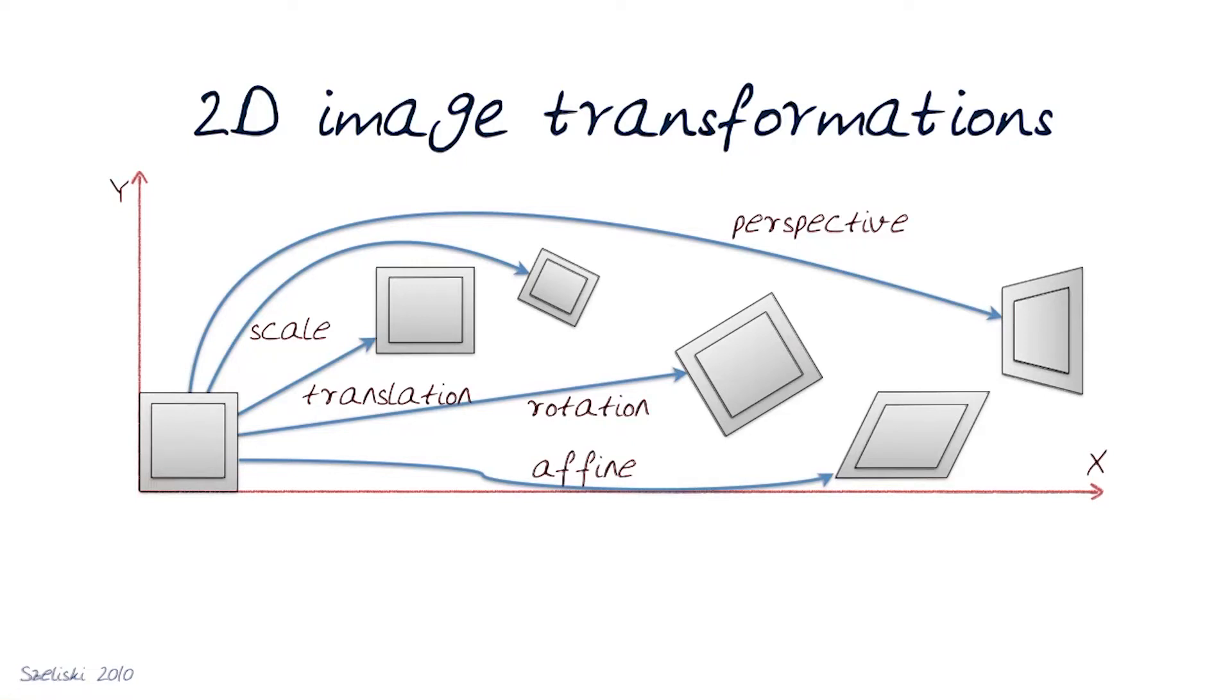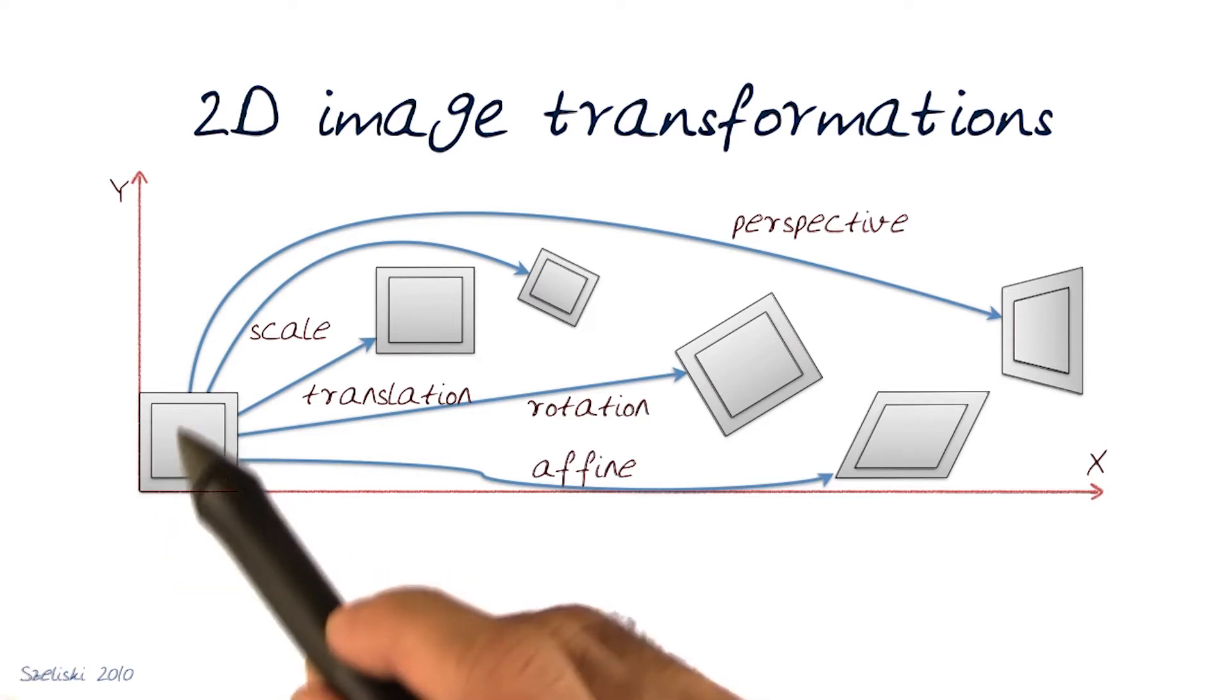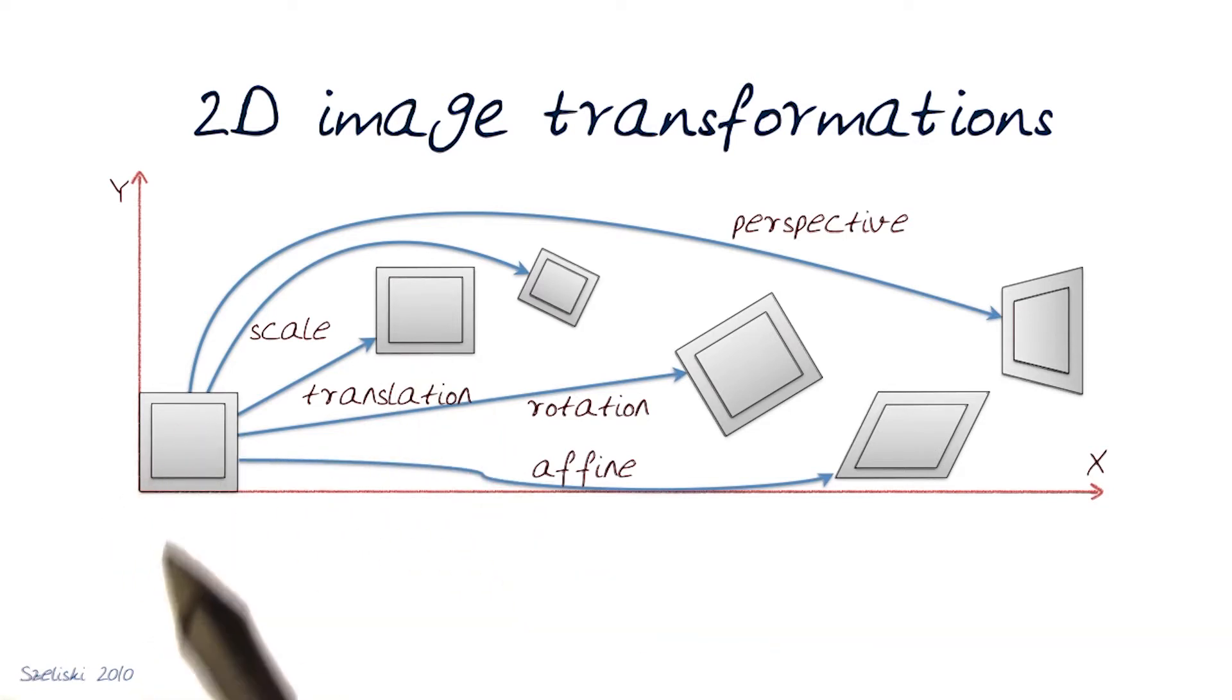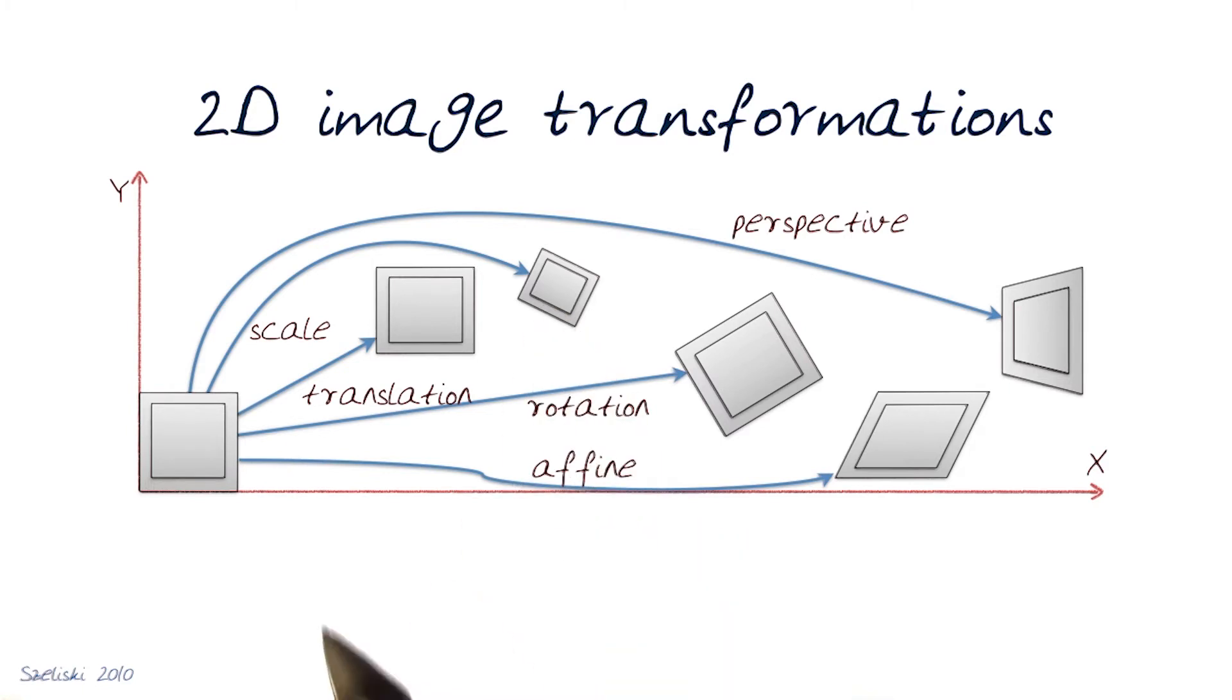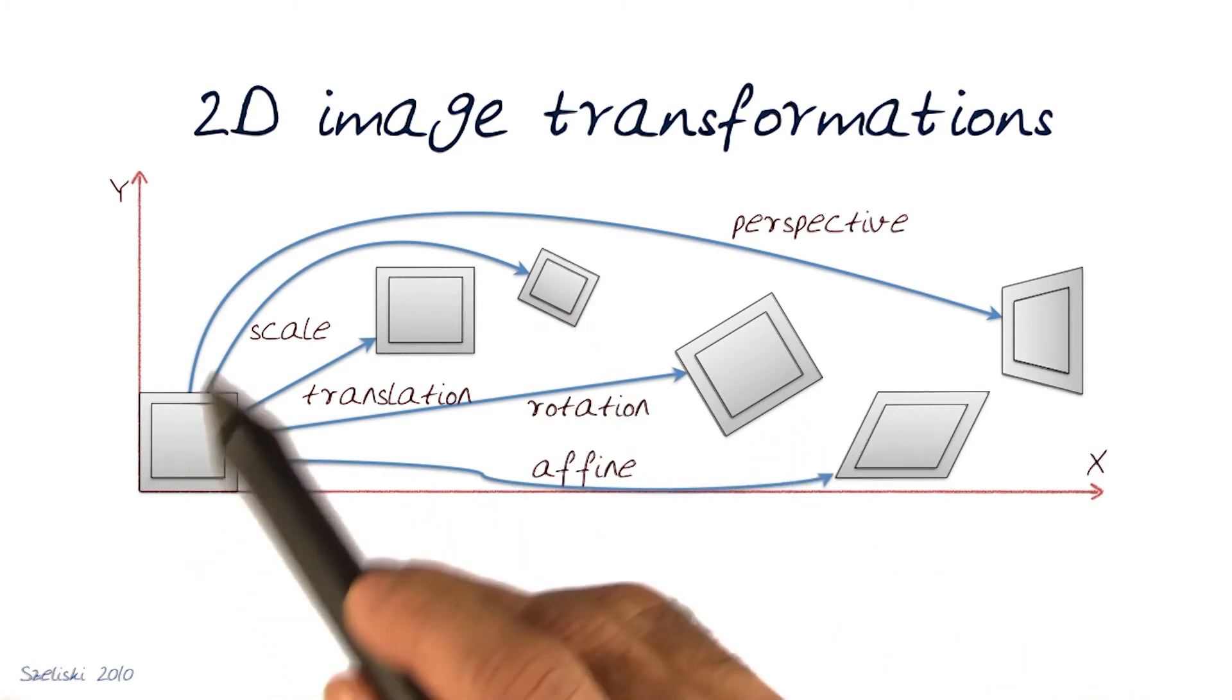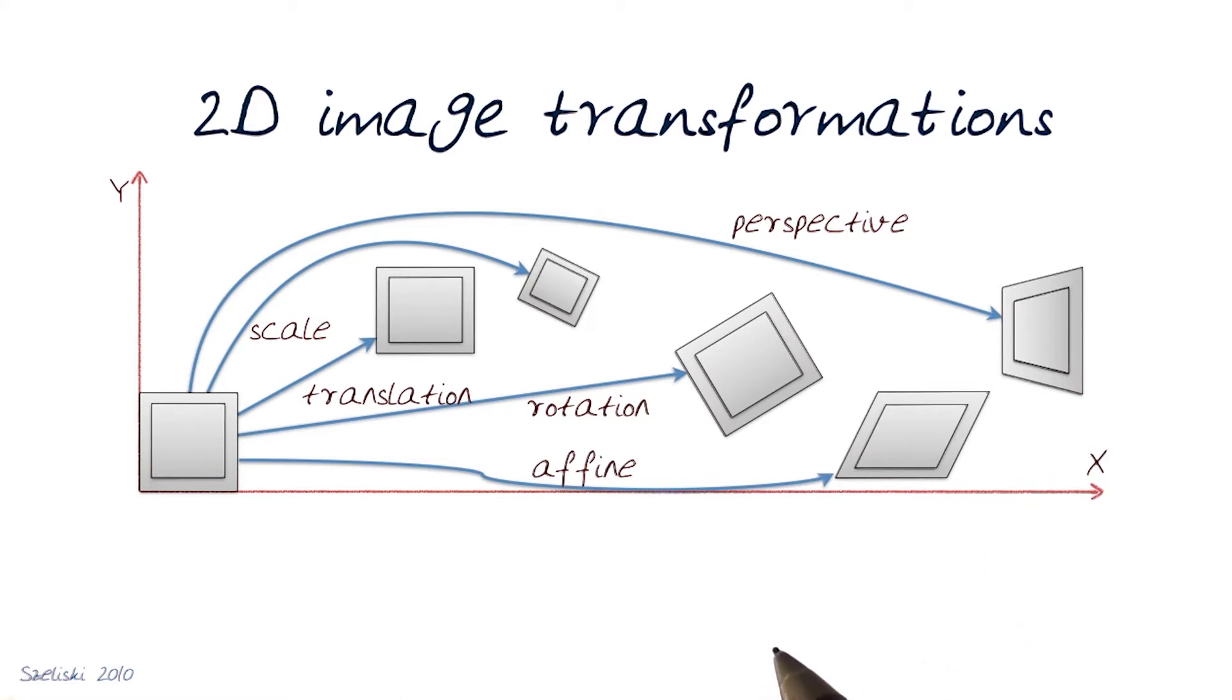Now let me actually just recap a little bit. So this is basically the 2D image transformations we're looking at. We have an object that could be translated. This could be the image itself. We could scale it, in this case I'm showing a scaling. We could rotate it, an affine warp, and a projective or a perspective warp would be this one.